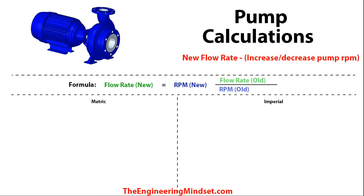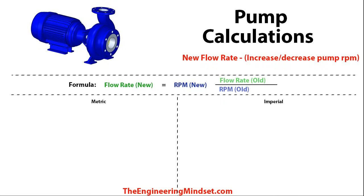Jumping into the calculations, you can see I've split the screen into two parts — metric and imperial — so we can look through the calculations for both. I've also tried to colour code all the figures so you can follow them all the way through, because sometimes it does get a bit confusing chasing these numbers. That should make it a little bit easier.